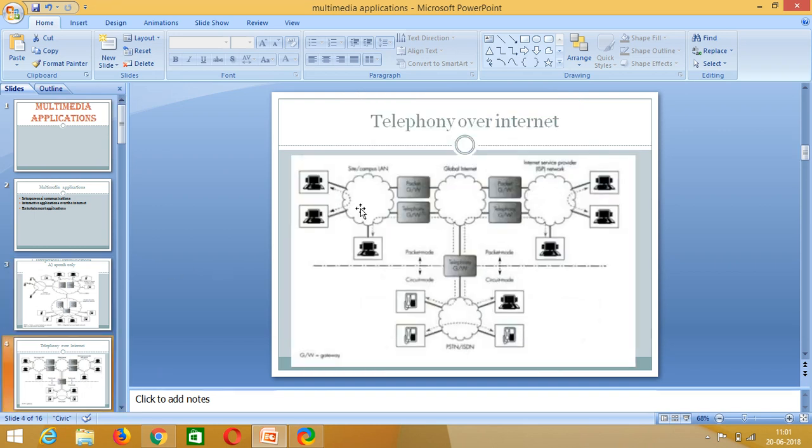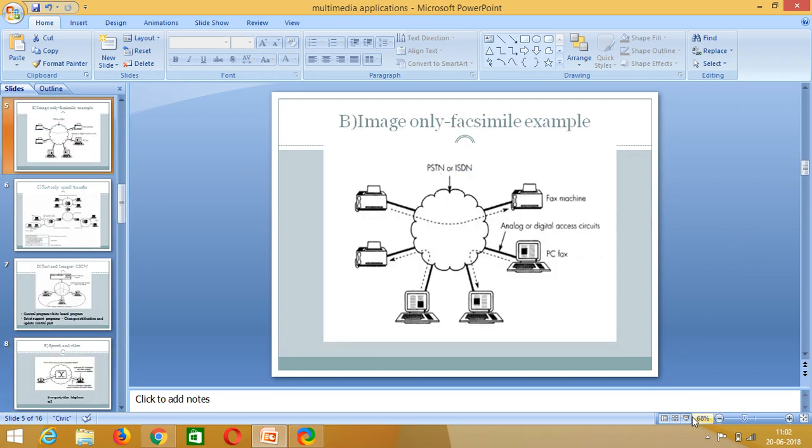Next, we have telephony over internet. You people very well know that we can make calls using the telephone, and that is what this shows, the telephony over internet. In order to have the internet connection, you can either have an internet service provider or a central site or campus line or an enterprise-wide network, as we discussed in the data methods in the previous section.